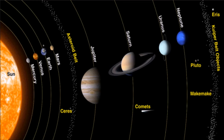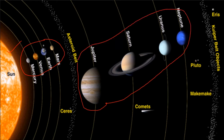Moving to solar system objects: in the solar system we have the sun at the centre and eight planets revolving around it. The four closest planets to the sun are called inner planets and the remaining are outer planets. There are also objects that don't qualify as planets called dwarf planets — examples include Ceres, Pluto, and Eris. There are many other dwarf planets beyond these significant ones.